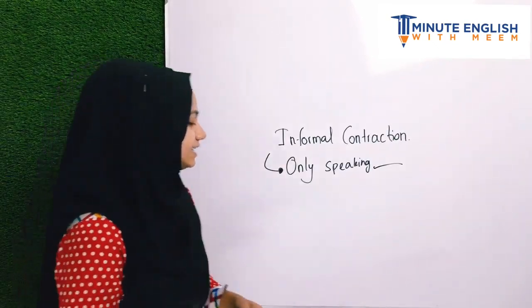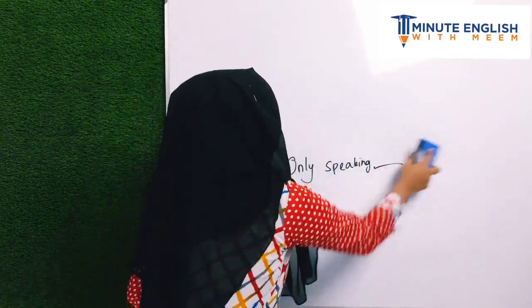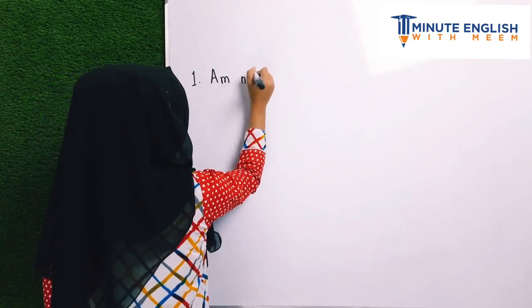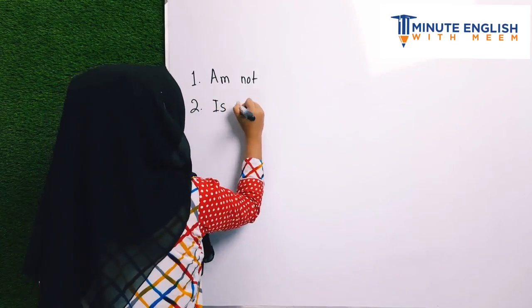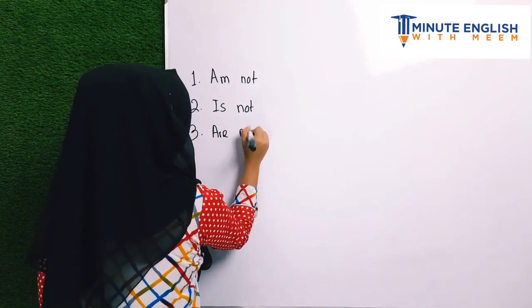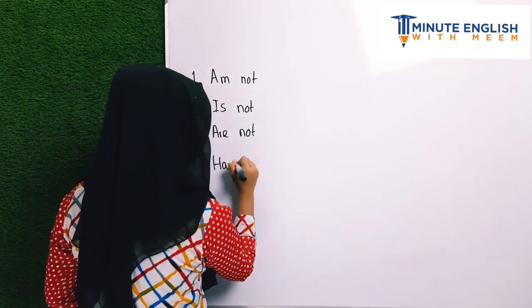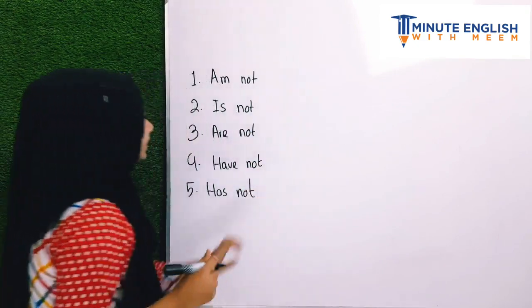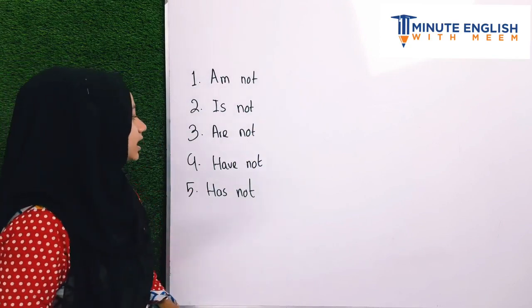Whenever we are speaking, we can use 'ain't.' So 'ain't' is the informal spoken form of five phrases: number one — am not, number two — is not, number three — are not, number four — have not, and number five — has not. These are the five forms that 'ain't' can replace in conversation.